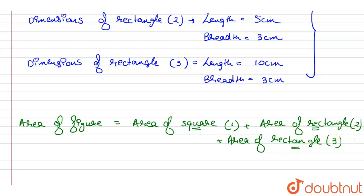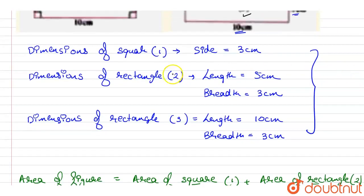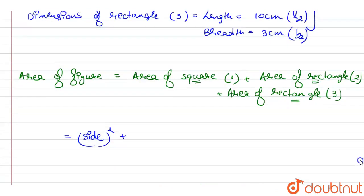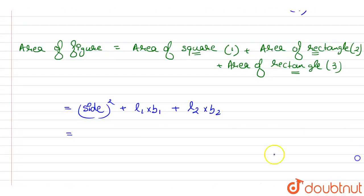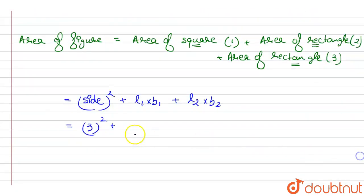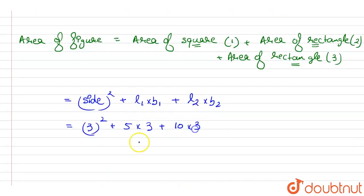The area of the square is side squared. For rectangle 2, let length be l1 and breadth be b1; for rectangle 3, length be l2 and breadth be b2. So the total area equals side² + (l1 × b1) + (l2 × b2), which is 3² + (5 × 3) + (10 × 3).